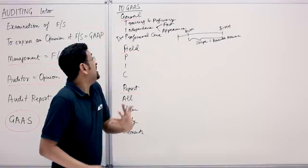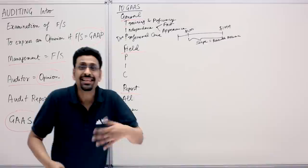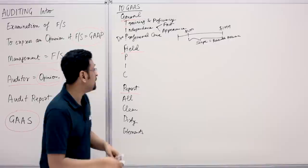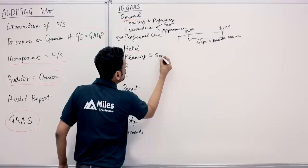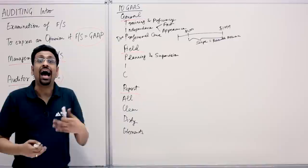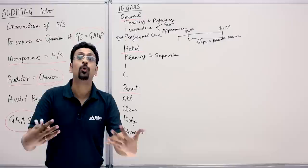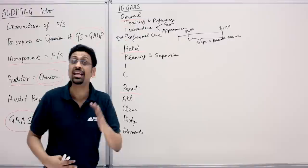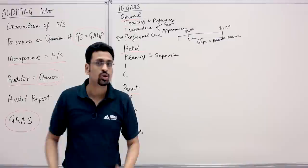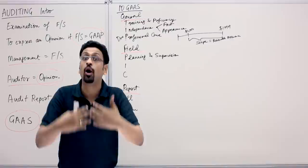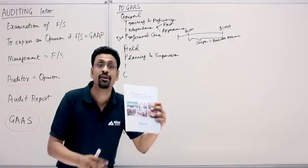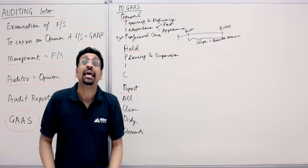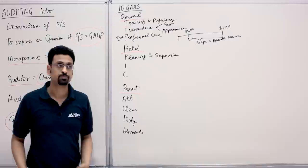Now let's get to the Fieldwork Standards — the 'field pick.' The P of field pick stands for Planning and Supervision. As auditors, we're required to adequately plan the audit — designing an appropriate audit program — and supervise audit assistance. Think about an audit team: an audit partner, managers, and assistants. The audit partner who signs the opinion cannot say the assistant did the job and it's fine — he needs to make sure assistants are properly supervised.